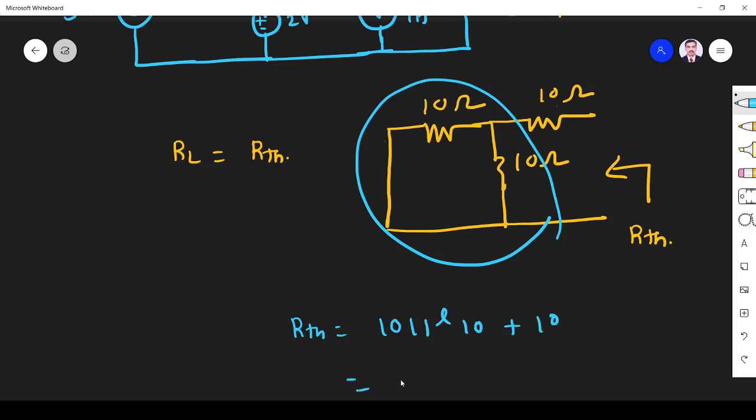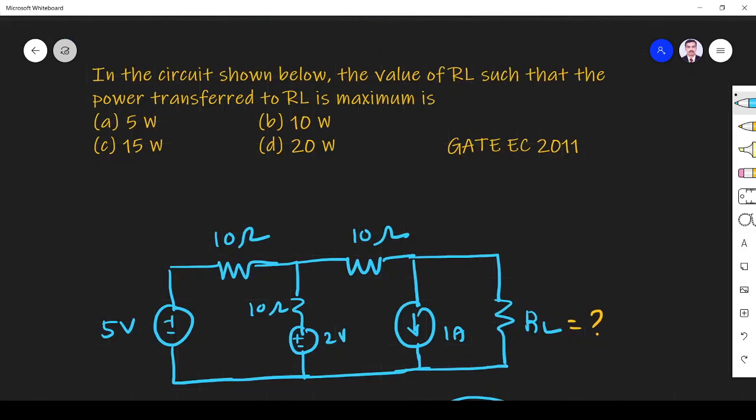Two equal resistances, so R divided by 2. So it is 5 plus 10, 15 ohm. So R Thevenin is equal to 15 ohm.